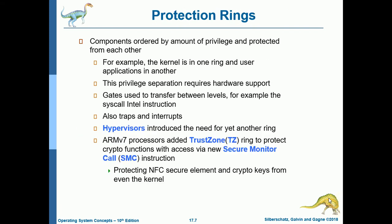Next we have protection rings. Components are ordered by amount of privilege and protected from each other. For example, the kernel is in one ring and user applications in another. The essence of protection rings is to separate kernel mode from user mode. This privilege separation requires hardware support. Gates are used to transfer between levels — for example, the Intel instruction — and there are also traps and interrupts.